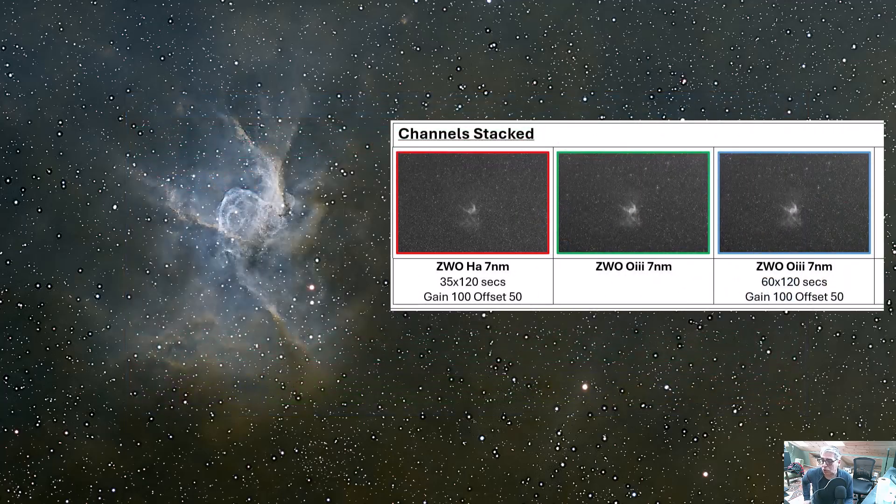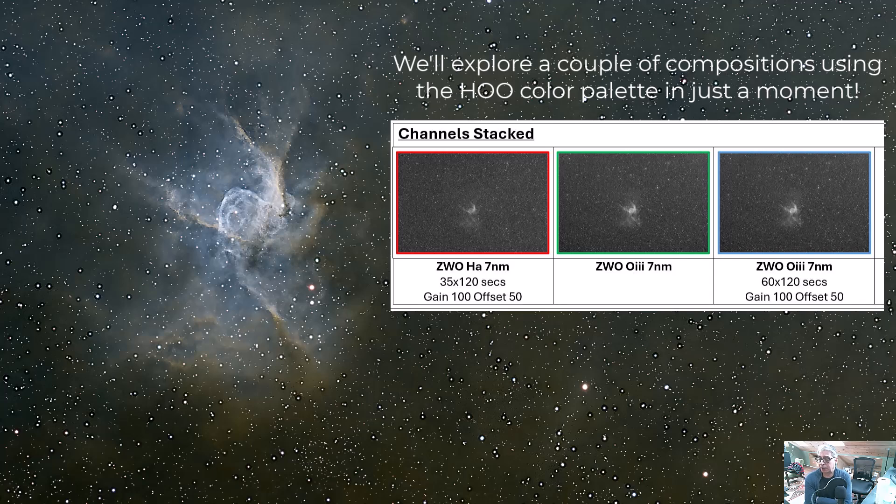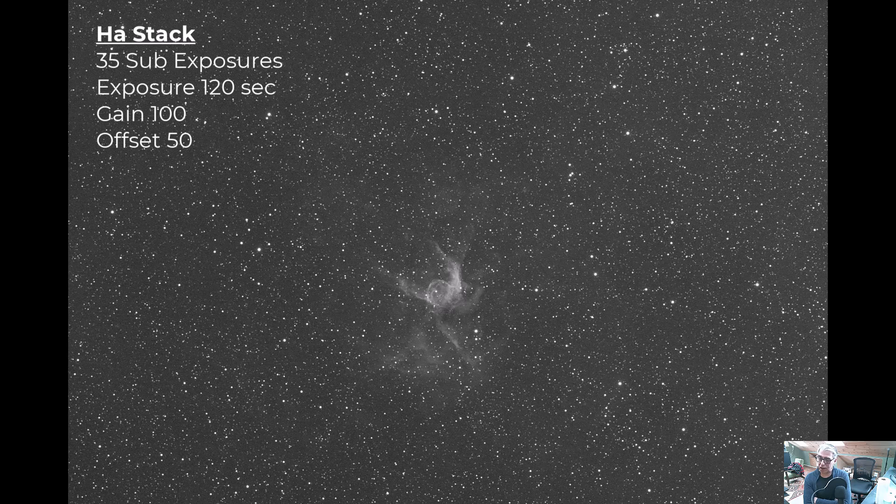Obviously this is a narrowband target. Specifically, I shot hydrogen alpha and O3. And I found that the O3 signal appeared to be the stronger of the two, which happens from time to time on different types of images. I was able to salvage 35 of my hydrogen alpha subs from these multiple sessions. Each of those subs was 120 second exposure using a gain of 100 and an offset of 50. I find that to be the best narrowband setting in my circumstances using this camera. That gave me about 70 minutes of hydrogen alpha, and that's what the stack represents.